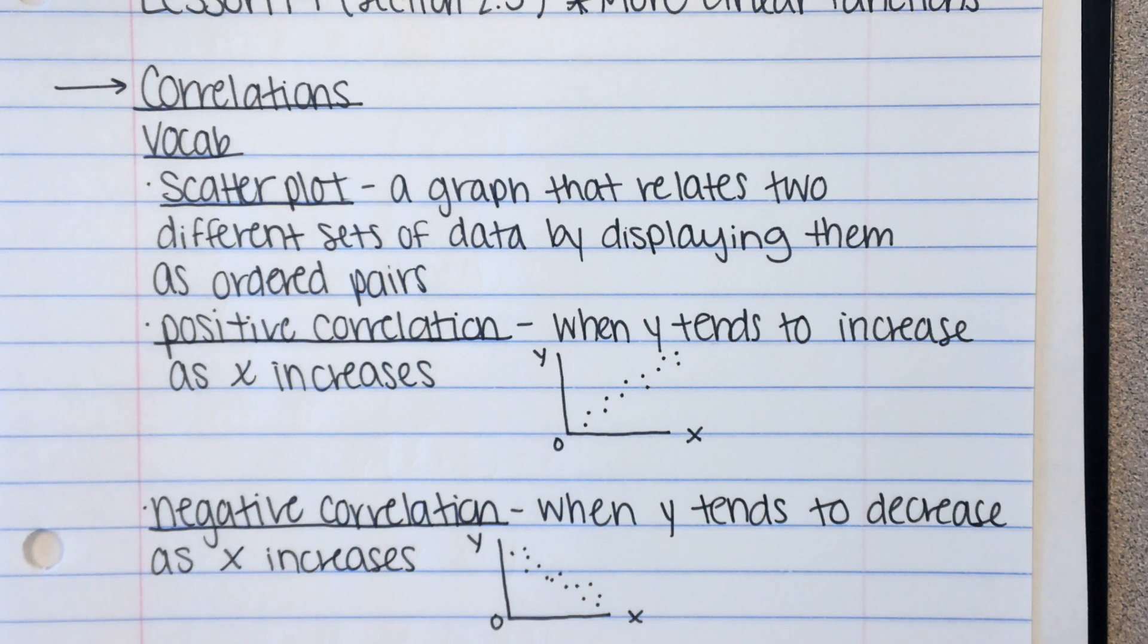So we're not going to spend a whole lot of time working to make scatterplots. You will have some problems in MathXL where you're given a table of values, and you have to pick the scatterplot that matches. But I'm very confident that you guys can do that. You just look at the X values and the Y values, make sure those match, and then just create those ordered pairs and see where they would be on the graph. And it's multiple choice, so those should be fairly easy.